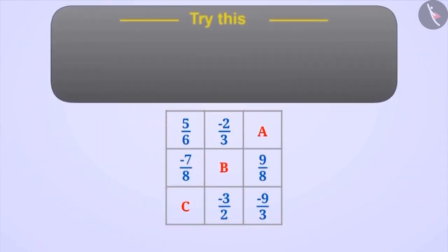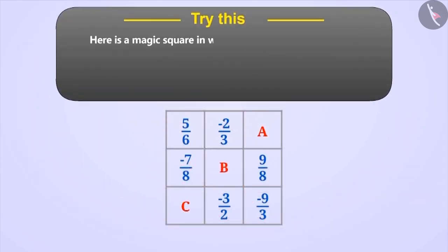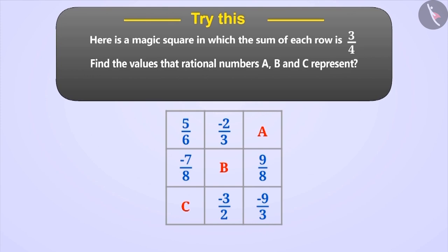Try this. Here is a magic square in which the sum of each row is 3/4. Find the value that rational numbers A, B and C represent.